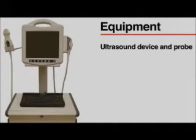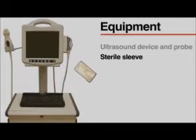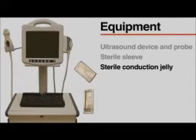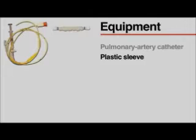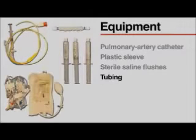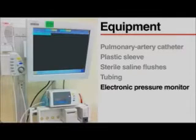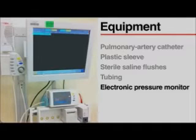If the sheath is being placed with ultrasound guidance, which is recommended, you will also need an ultrasound device and probe, a sterile sleeve for the probe, and sterile conduction jelly. To place the pulmonary artery catheter, you will need the catheter, a plastic sleeve, sterile saline flushes, appropriate tubing, and an electronic pressure monitor, preferably one capable of displaying multiple tracings at the same time.